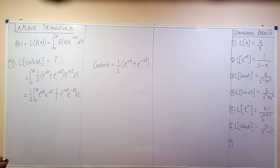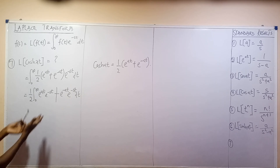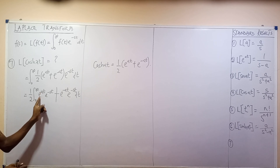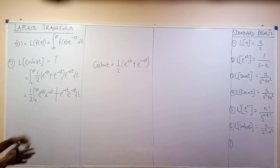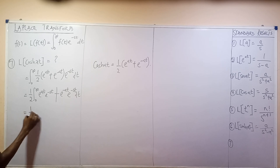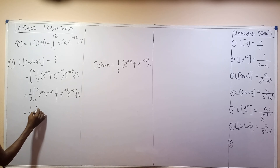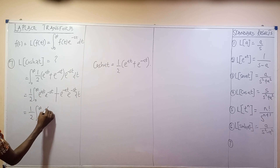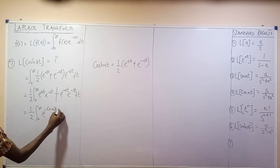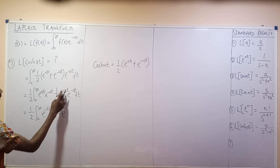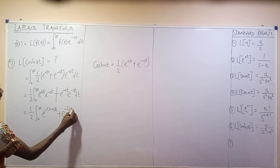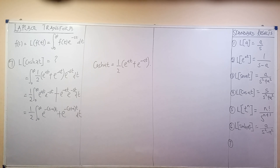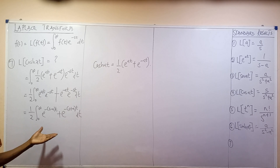The next step is to simplify the exponentials by combining like bases. This becomes 1/2 times the integral from 0 to infinity of exponential(−s − a)t plus exponential(−s + a)t, then dt.